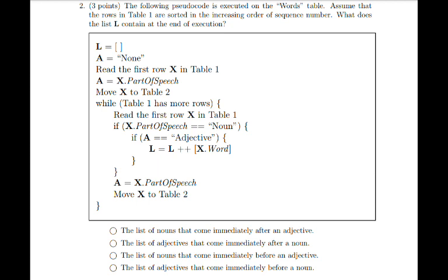Then we exit the nested if statements, and assign the part of speech of the current row to variable A, and move the current row to table number 2. And the loop continues.